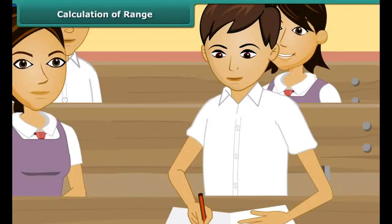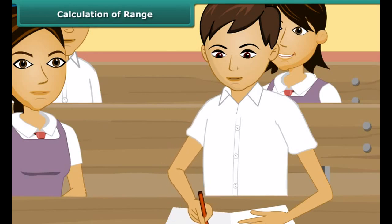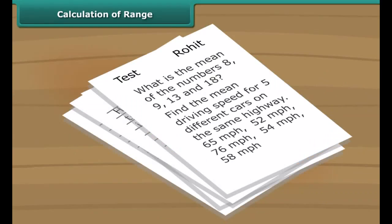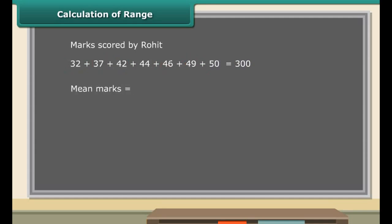Rohit is an intelligent and studious boy who gave his maths test seven times to improve his marks. The data shown here displays the marks scored by Rohit. Can you calculate the mean test marks? First, add up the marks — the sum is 300. He gave the maths test seven times, so the mean marks of Rohit equal 300 divided by 7, which is approximately 42.86.